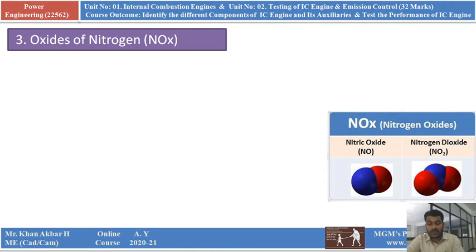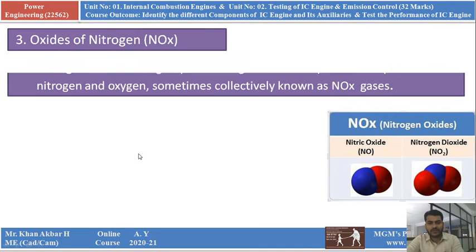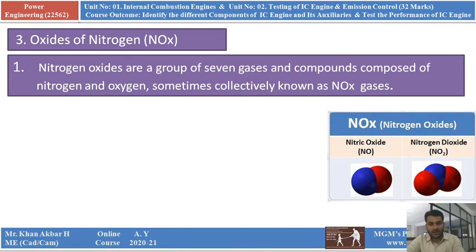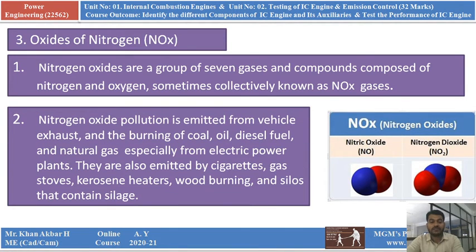Nitrogen oxides are a group of 7 gases and components composed of nitrogen and oxygen, sometimes collectively known as NOx gases. It is a group of 7 gases whose composition is nitrogen and oxygen — this is why they are called oxides of nitrogen. NOx is the short form for oxides of nitrogen.